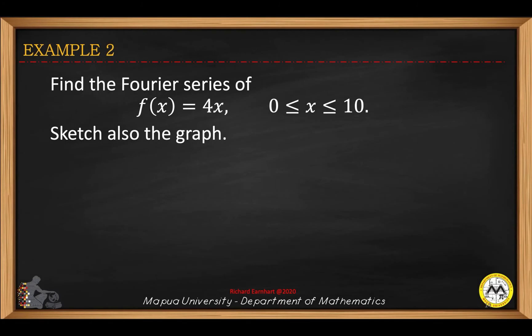This is part 2 of lesson 1 under Fourier series analysis. In the following example, we discuss the Fourier series of a function defined on a given interval. Here we find the Fourier series of f(x) = 4x defined from 0 to 10, and we also sketch the graph.